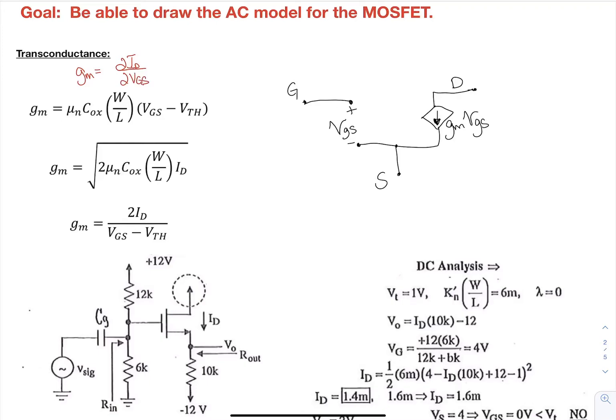When we do that, we can get GM in either of these three forms. These would be the values for GM. They're based on the DC value for VGS or the DC value for ID. So these are both the DC values.